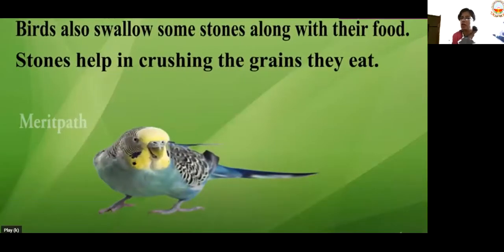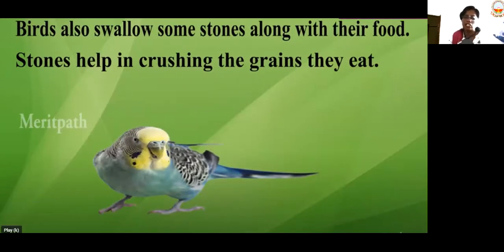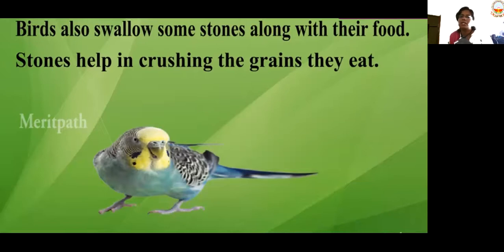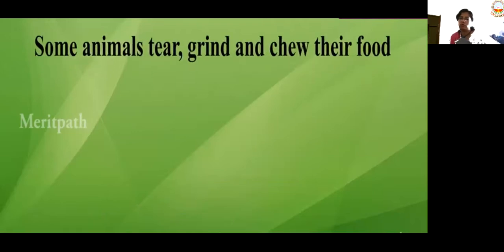So the second thing we saw was sticky tongues, and the first thing was swallowing. Now let's see how some animals crush their grains. Birds also swallow some stones along with their food — stones help in crushing the grains they eat. Some animals tear, grind, and chew their food.